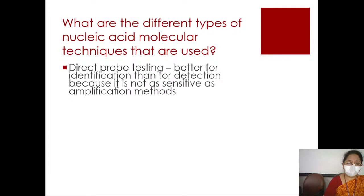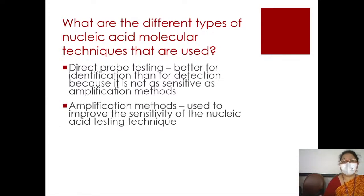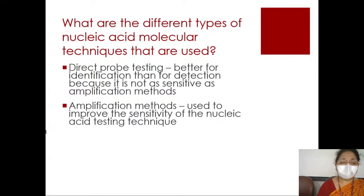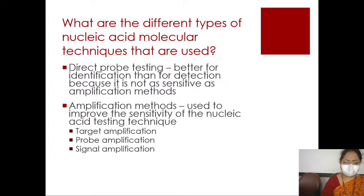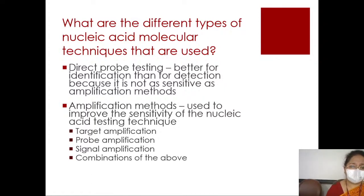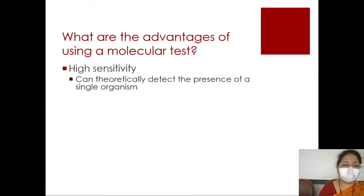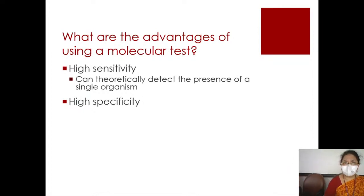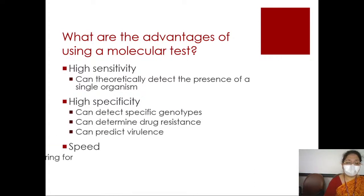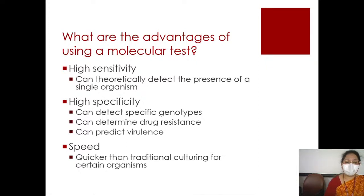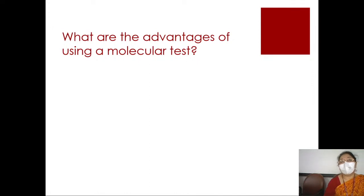There are different types of methods: you could use a probe and hybridize it to nucleic acid in a sample without amplification, or use amplification methods which amplify the DNA — including target amplification, probe amplification, and signal amplification — or a combination. The advantages include improved sensitivity, very high specificity if the method is well designed, and speed. Some newer methods are being designed based on newer technology which will reduce the time taken by PCR.